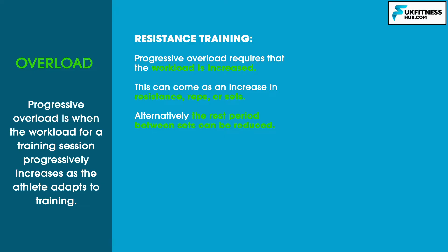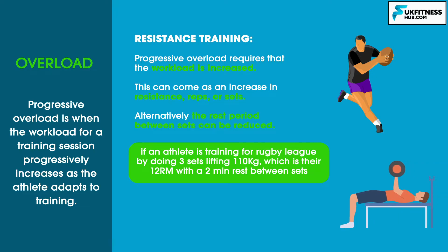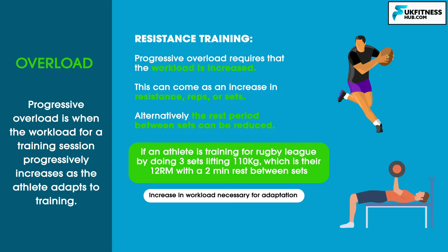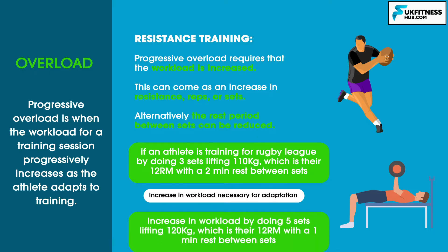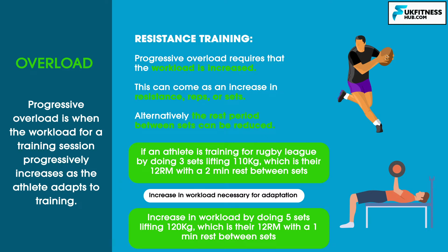Alternatively, the rest period between sets can be reduced. For example, an athlete training for rugby league doing three sets of 110kg bench press — their 12 repetition max — with two minutes rest between sets will no longer adapt unless progressive overload is applied. This increase in workload could be done by completing five sets, increasing the weight to 120kg as a new 12 rep max, or decreasing rest time to one minute between sets. The best way to use progressive overload in resistance training is to increase the weight, which results in improvements in strength as well as developing recovery times and muscular endurance.